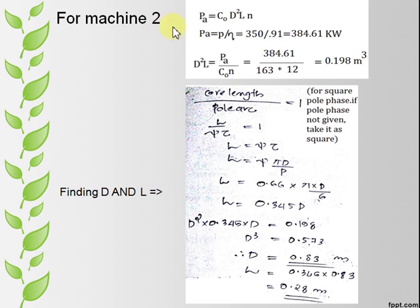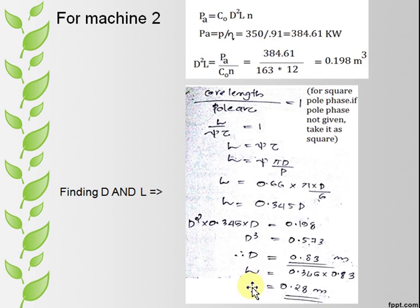For machine 2, find power using same way as machine 1. Also find D and L as given below. Then find flux and number of conductors from equation of B of E and equation of emf respectively.